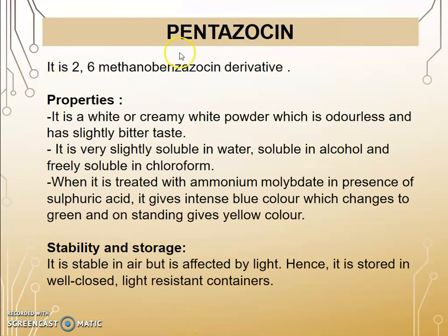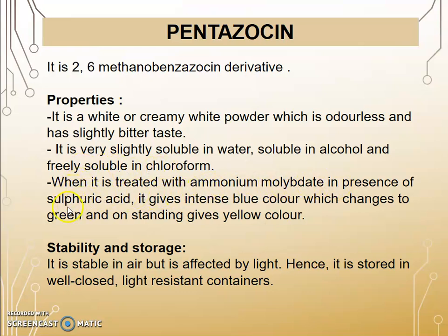The next drug is Pentazocine. It is a derivative of benzazocine — specifically a 2,6-methano-benzazocine derivative. Property: it is a white or creamy white powder, odorless with a slightly bitter taste. It is very slightly soluble in water, soluble in alcohol, and freely soluble in chloroform. When treated with ammonium molybdate in the presence of sulfuric acid, it gives an intense blue color, which changes to green and on standing gives a yellow color. Stability and storage: it is stable in air but is affected by light, hence stored in a well-closed, light-resistant container.